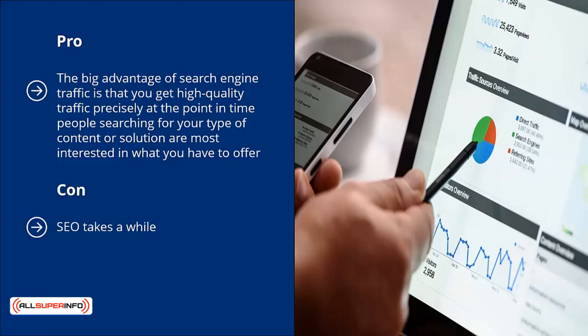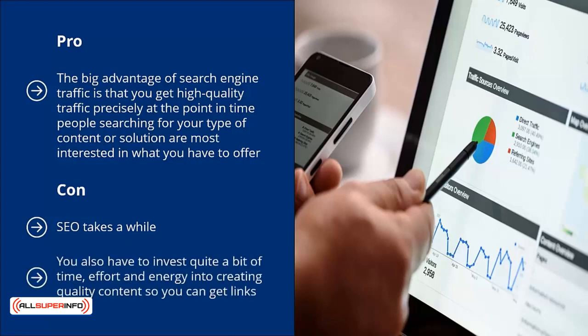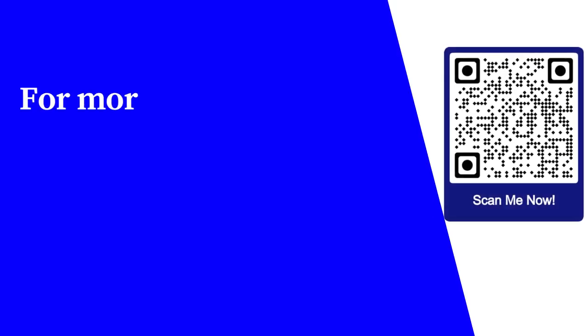Con: SEO takes a while. If you're going to do this completely above board with absolutely no shortcuts or tricks, don't expect any results until three months at the earliest. You also have to invest quite a bit of time, effort, and energy into creating quality content. Scholarships and press releases also cost money.